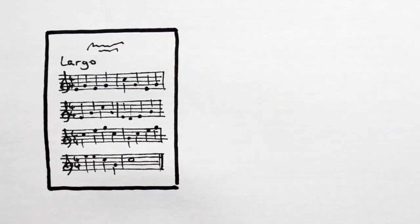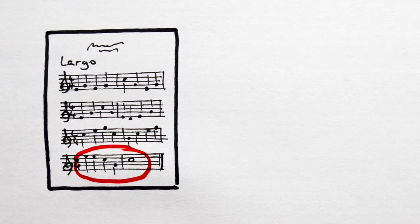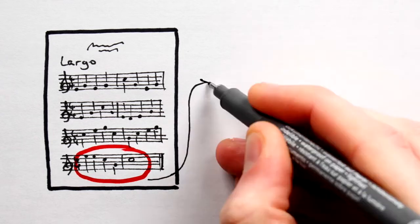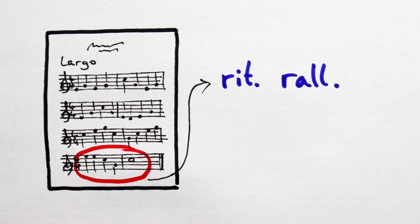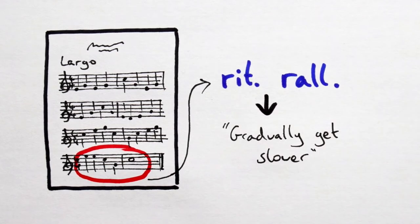Anyways, sometimes the music will need to change speed during the piece, particularly towards the end. When this happens, the composer can use words like rit or ral. Which, kinda confusingly, both mean to gradually get slower.